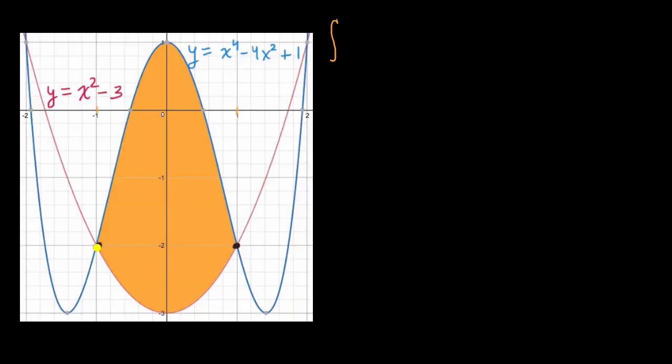you do indeed get y is equal to negative two. And the same thing is true when x is equal to one. One minus three, negative two. One minus four plus one, negative two. So our bounds are indeed, we're going from x equals negative one to x equals positive one.